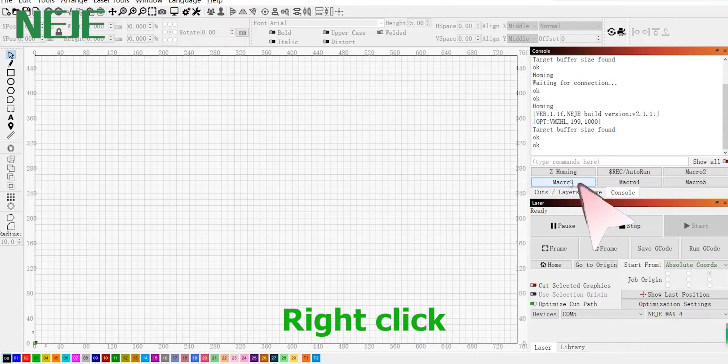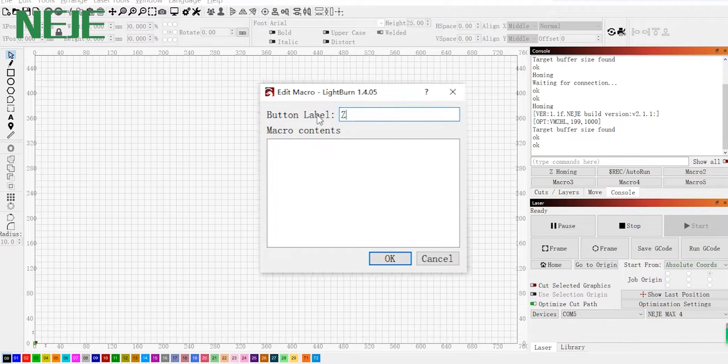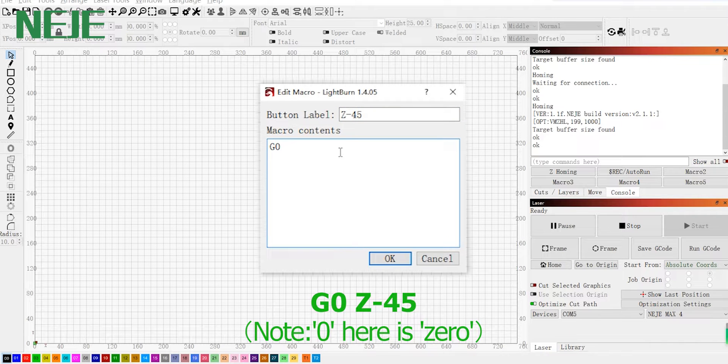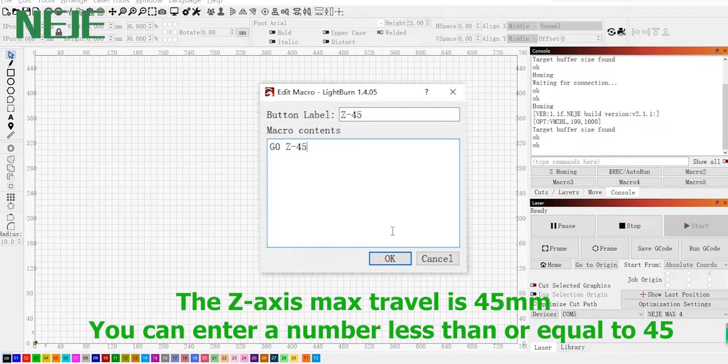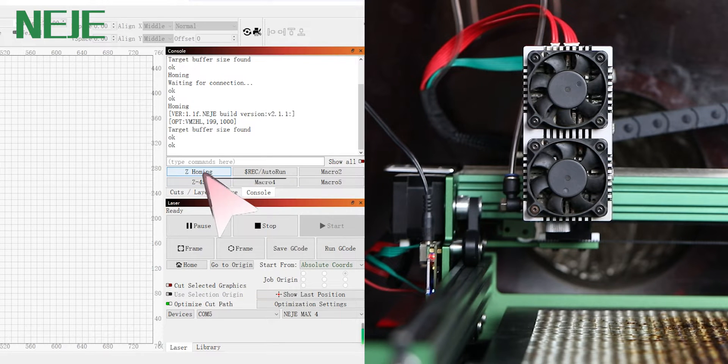Right-click another macro, and then input G0 space Z-45. Then the laser module will move down 45 millimeters. Let's see how it works.